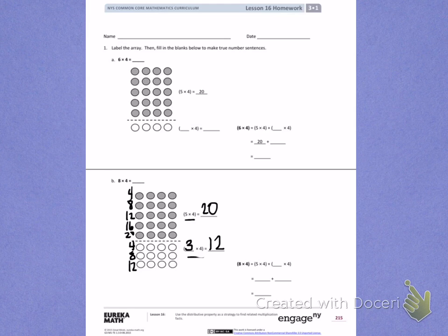Down in the second part, I see I have 8 times 4 equals 5 times 4 plus blank times 4. That blank is asking for the number of rows in my second part of the array, and that was 3 rows of 4.